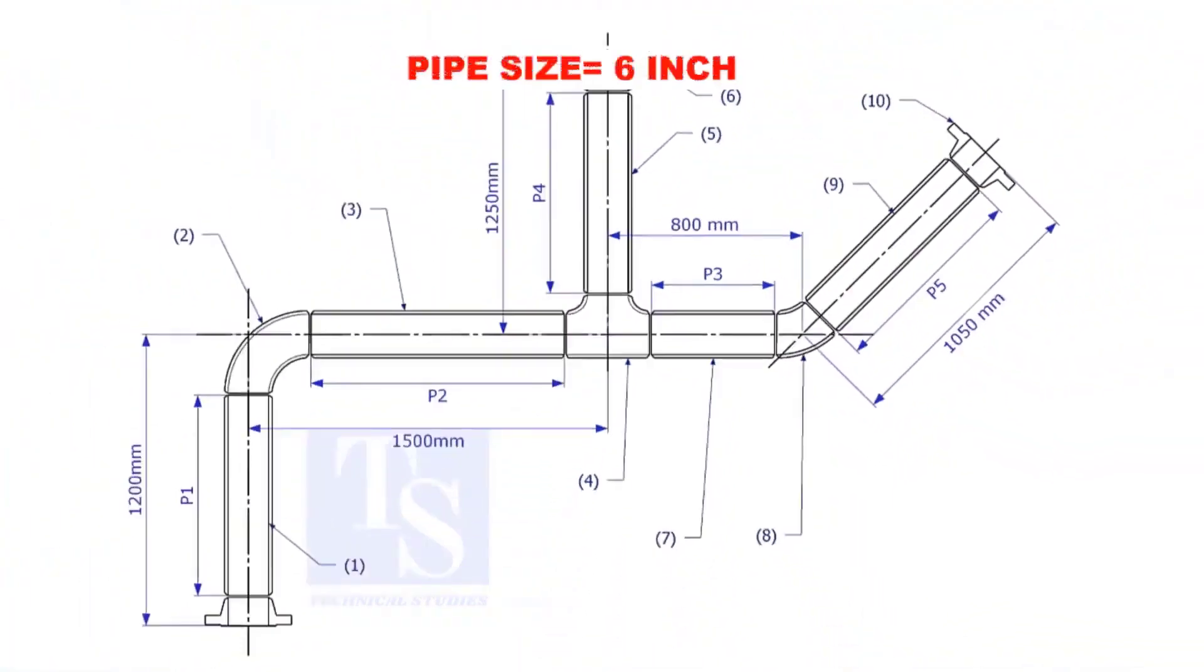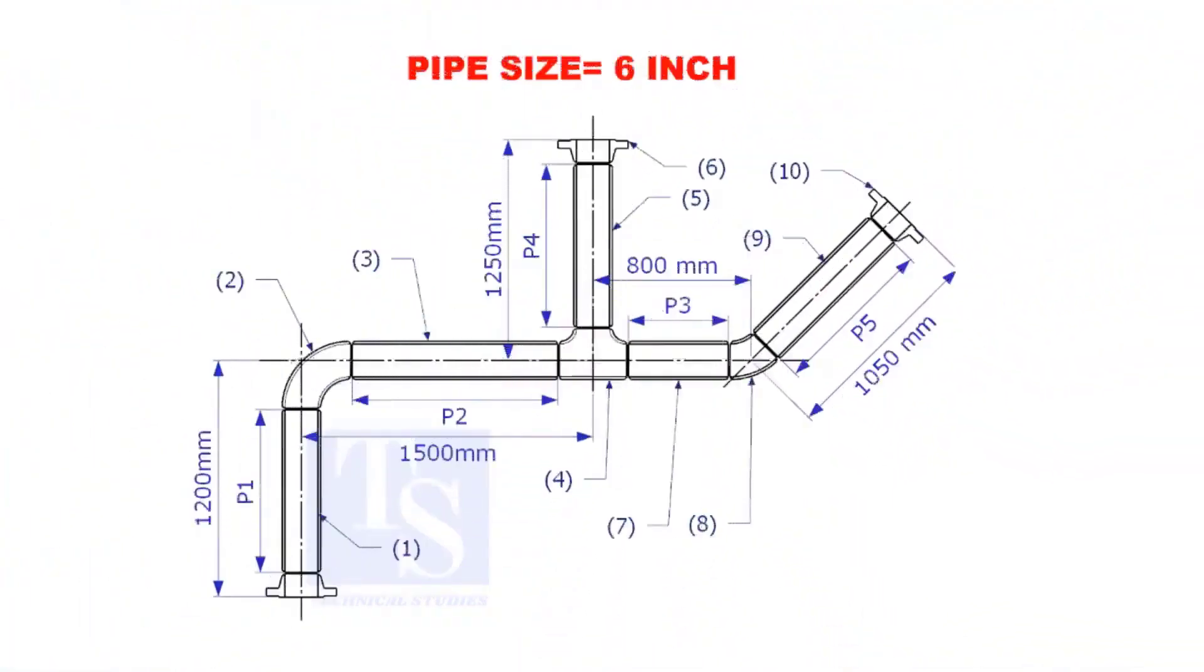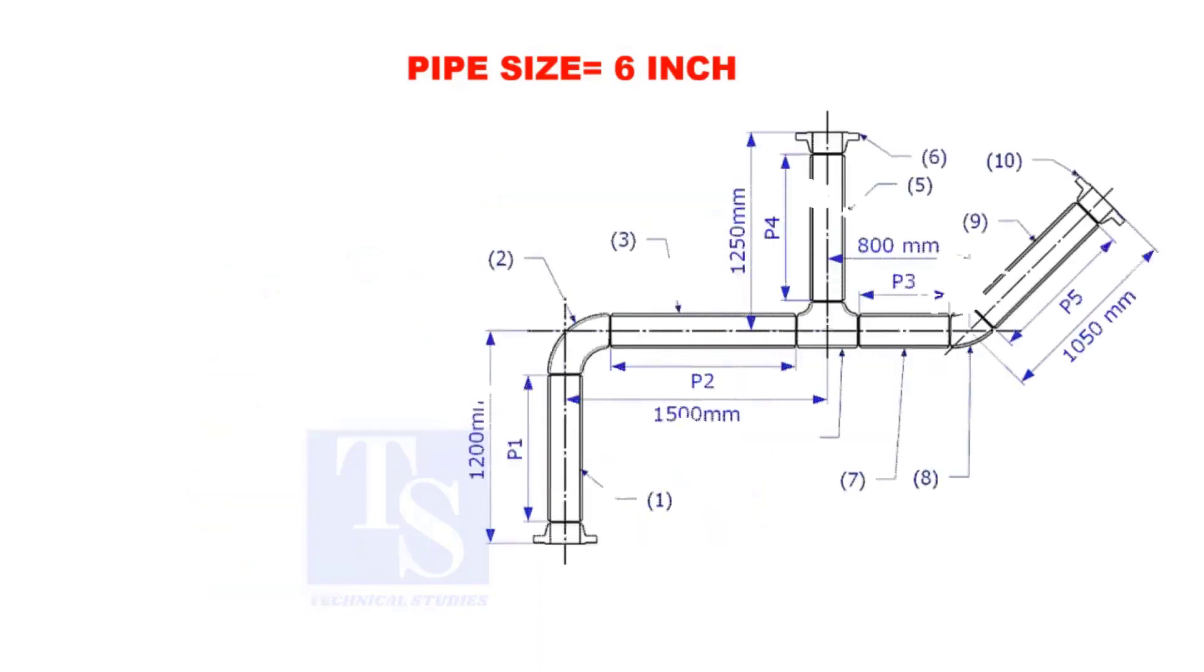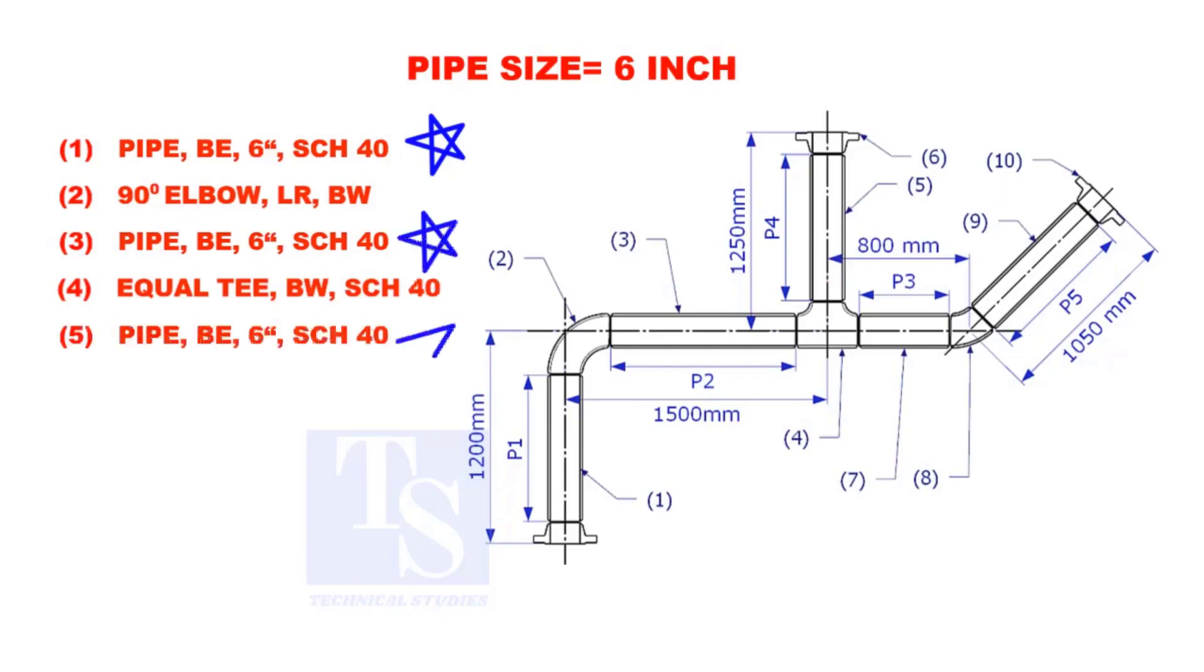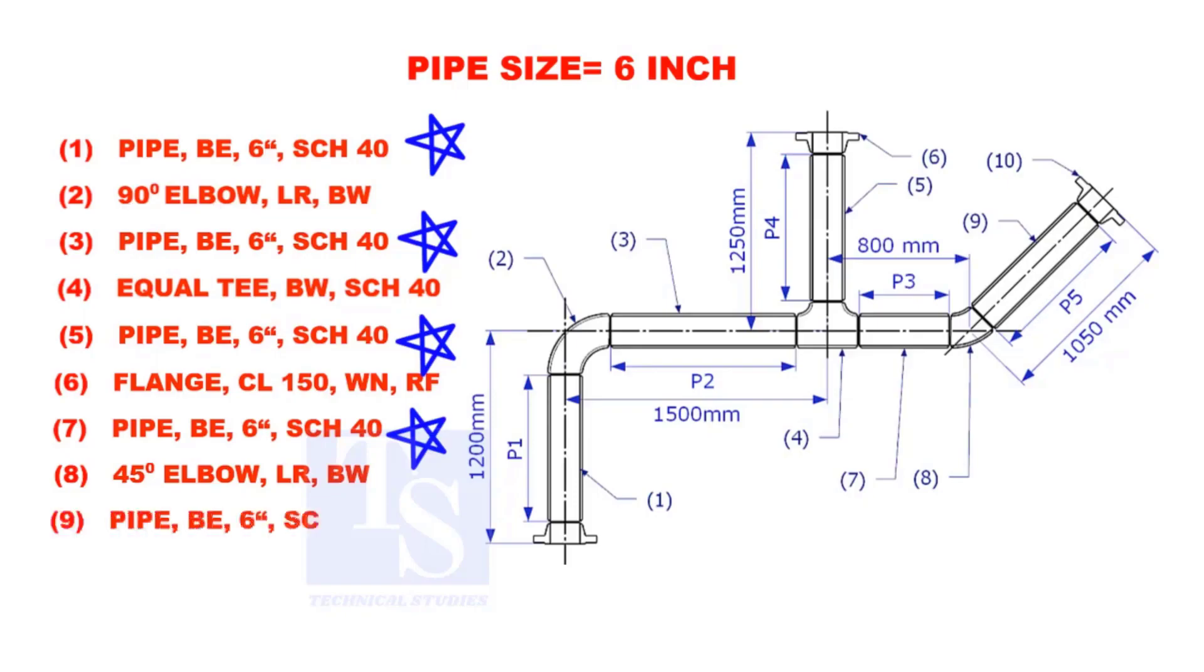Assume that the pipe size is 6 inches. Item numbers 1, 3, 5, 7, and 9 are pipes.